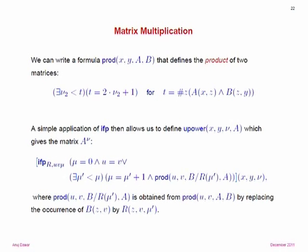It's actually quite easy to do this with a counting term. I just need to pick out those positions X and Y for which the number of Z such that A(X,Z) and B(Z,Y) are both true — that number should be odd. And that's what this formula does: matrix multiplication written out in first-order logic with counting.